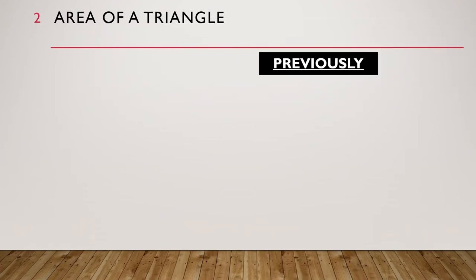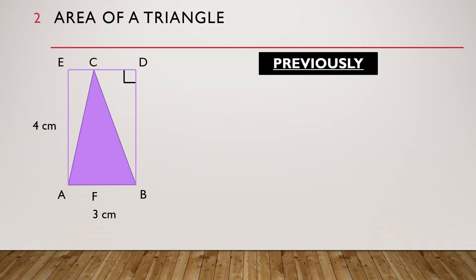Previously on area of a triangle, we had a triangle ABC and a rectangle ABDE as shown. We found that the area of triangle ABC is half of the area of its related rectangle ABDE.